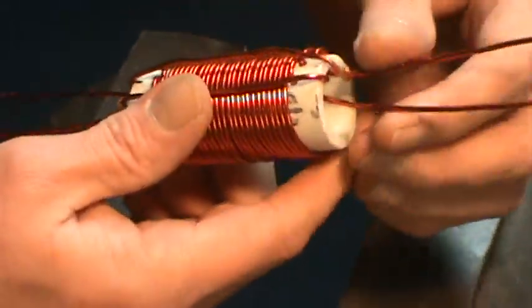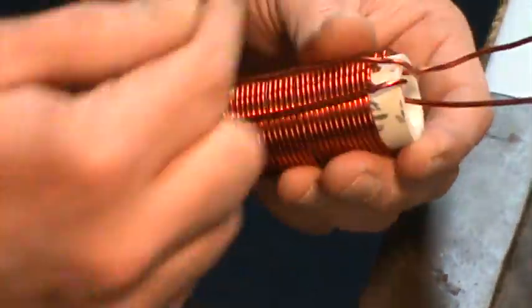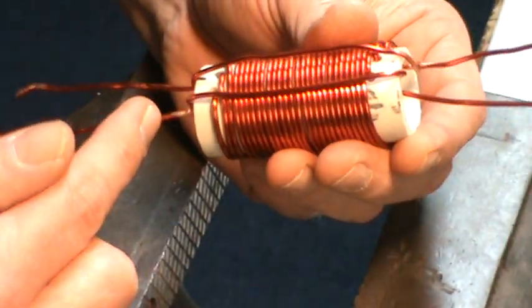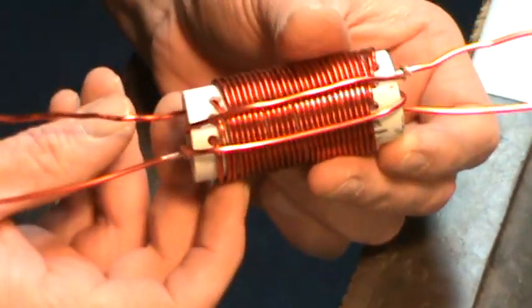So that was really pretty simple to do. Now the two long leads sticking out here, one of them just went up to this side, the other one folded over and went down to the other side. That was really pretty easy to do.